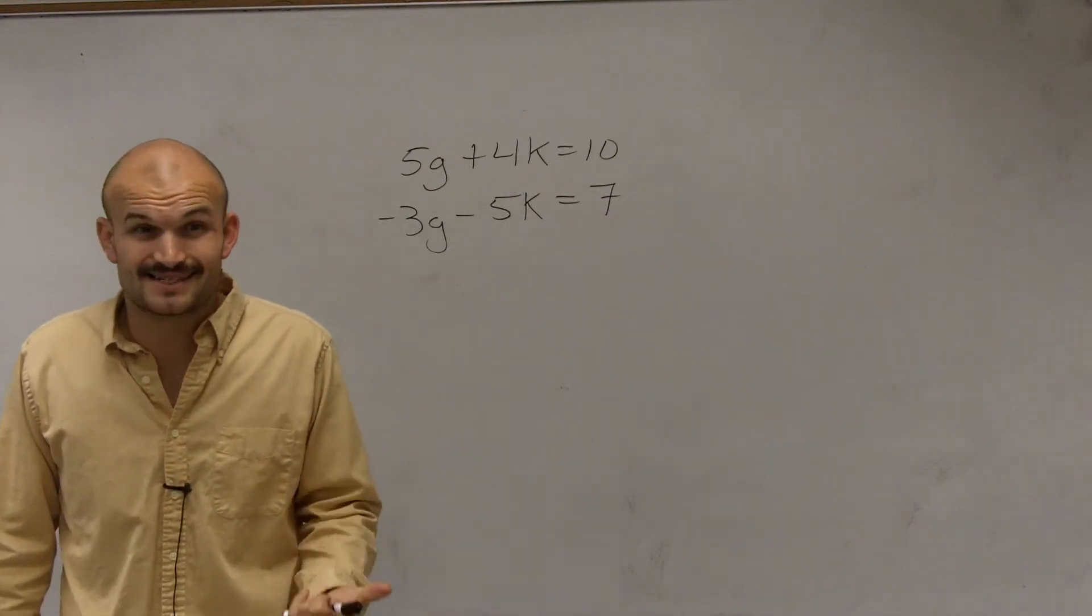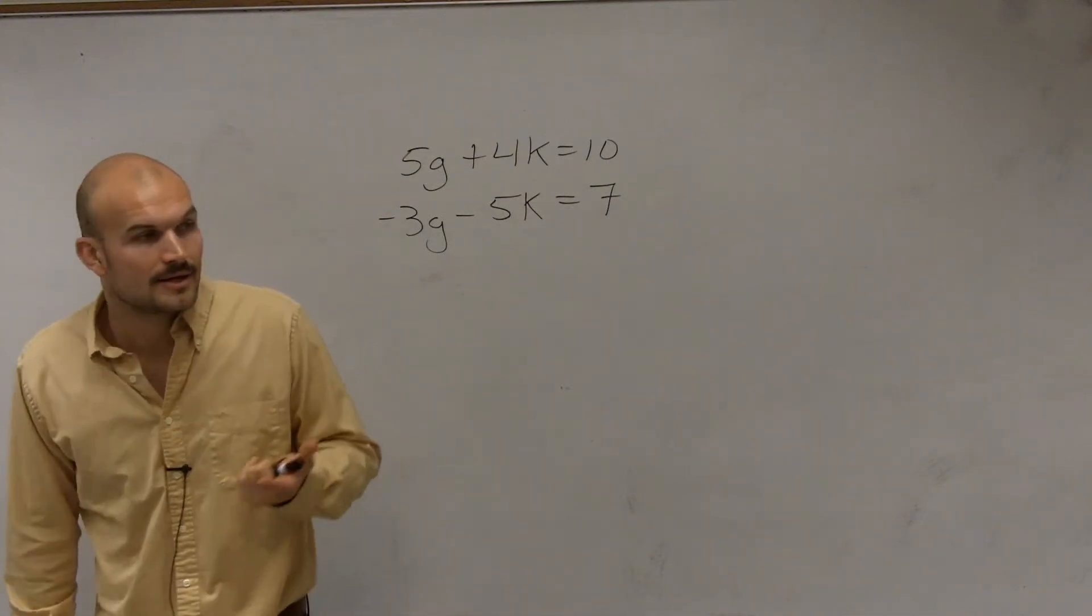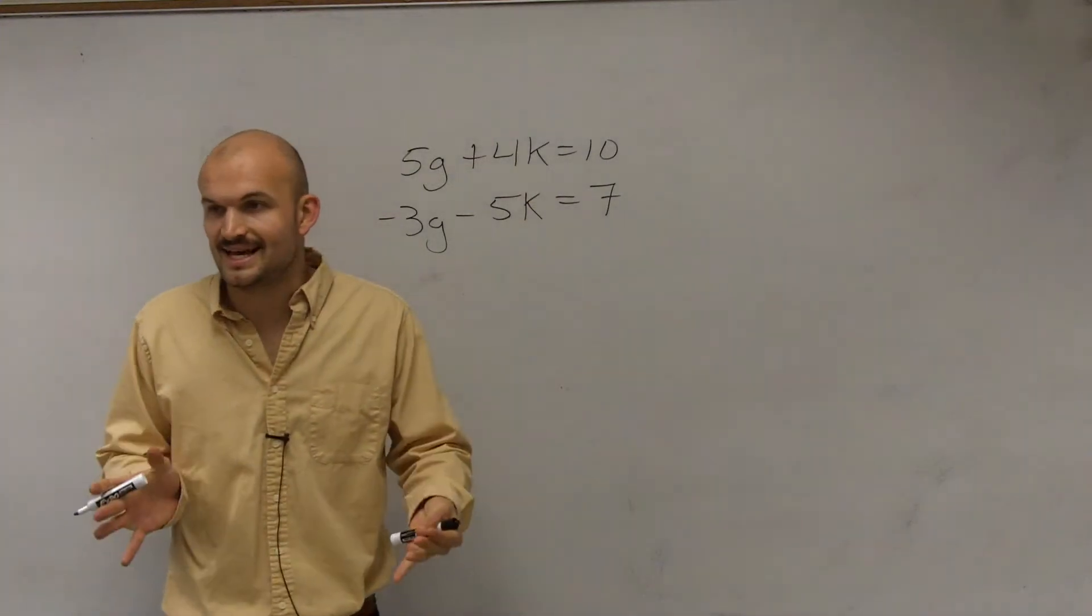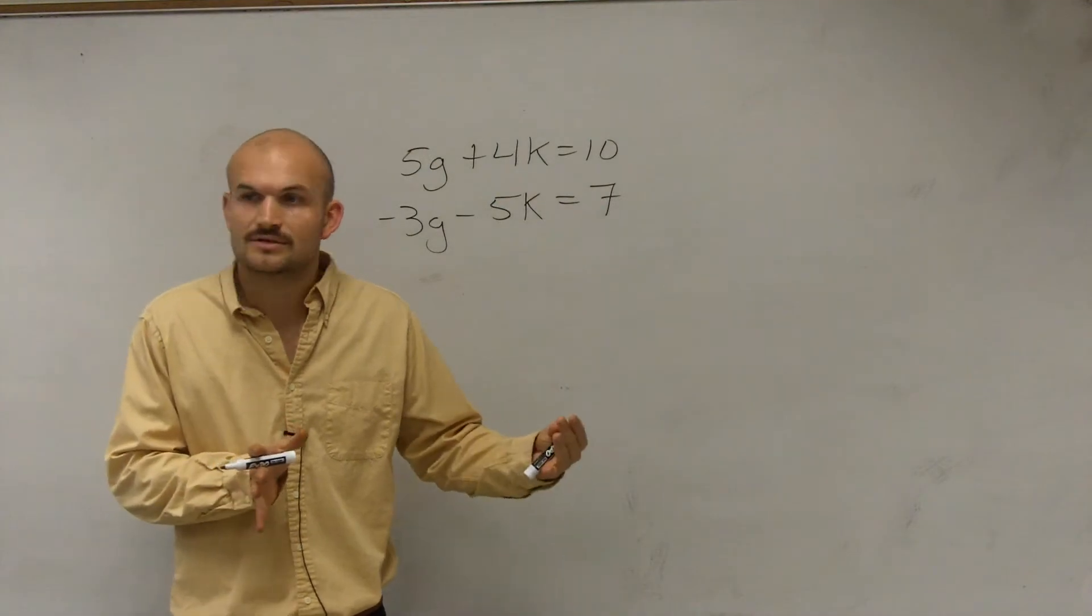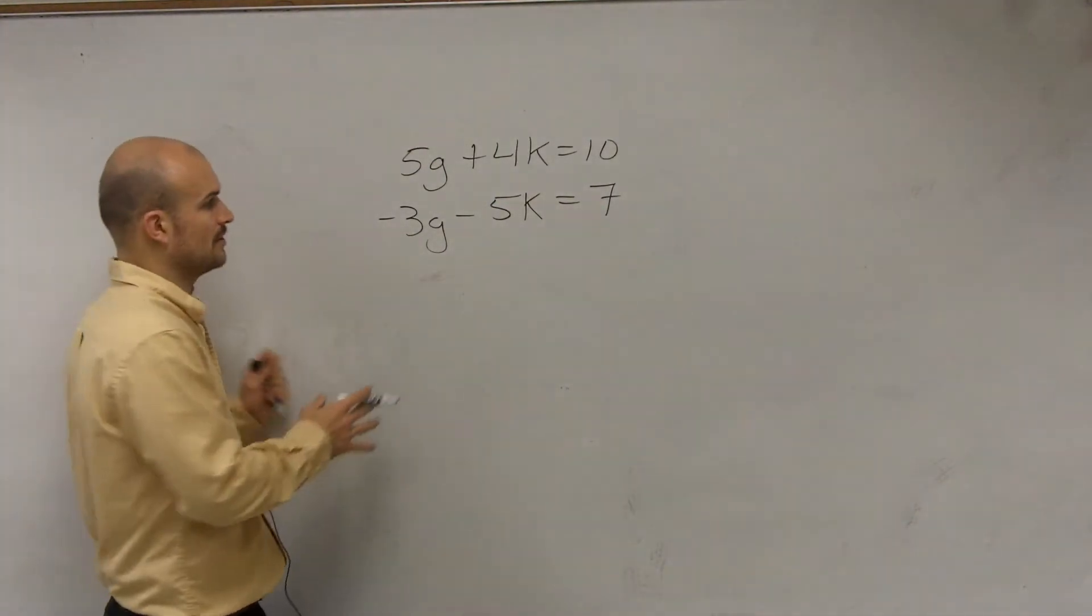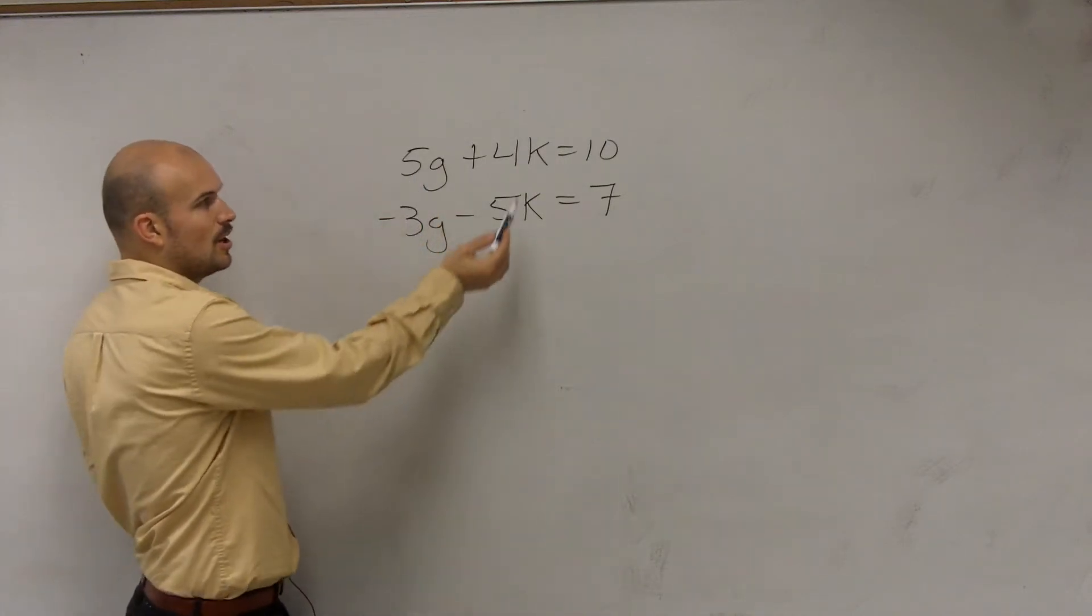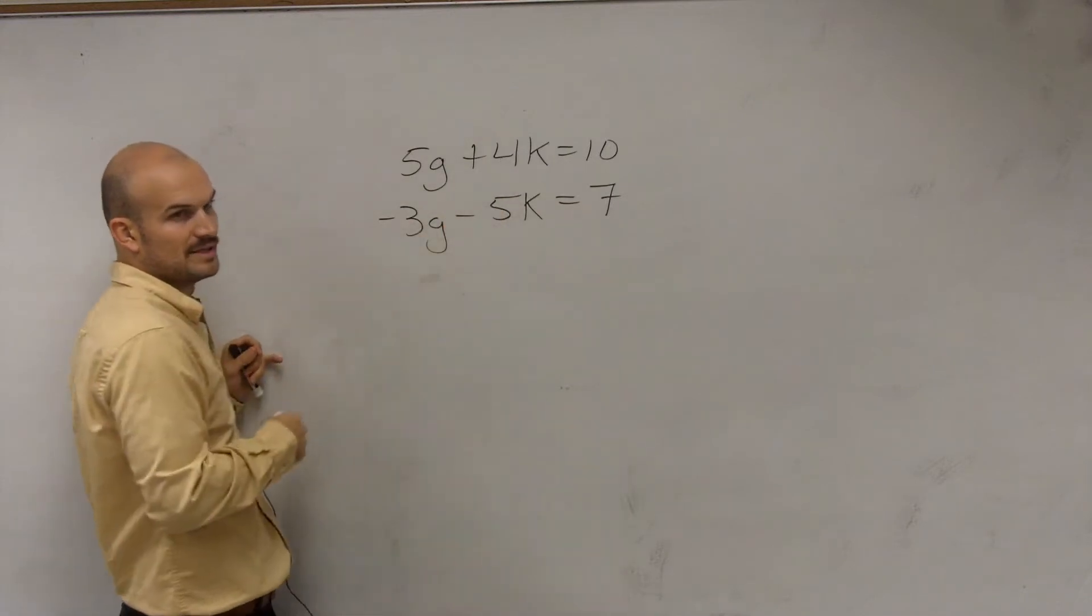So we're going to have to make a decision on what variable we want to eliminate. Meaning what variable do we want to get to have the same coefficients? Right, Chris? Yeah. So when you look at this, because this is like the part where you're coming in, we want to say, do we want to get 5 and negative 3 to be the same, or do we want to get 4 and 5 to be the same?